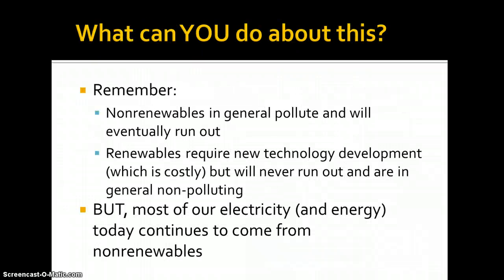A couple things to remember: non-renewables, in general, are going to be the polluters. We have a couple examples of renewables that pollute, but for the most part it's non-renewables. We also know that eventually we will run out. In this closed system planet of ours, we have what we have — and that's it. We're using these materials faster than they can be naturally replaced, so we will run out. Renewables require new technology and new development, so they're costly. There's a big upfront cost, but we will never run out of them, and for the most part they're non-polluting. Most of our electricity and energy today comes from non-renewables, by far.